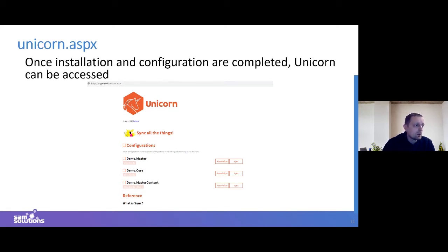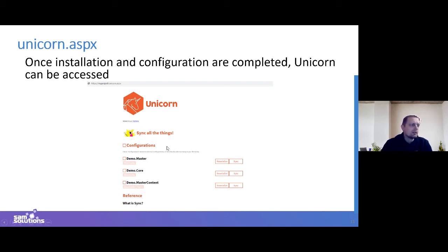Once you deploy your project, you should be able to open the Unicorn admin page. Here you can see each config as a separate group that can be synced independently. You just check what you need to sync and click the Sync button — you can sync each configuration separately or check all of them and sync all at once.